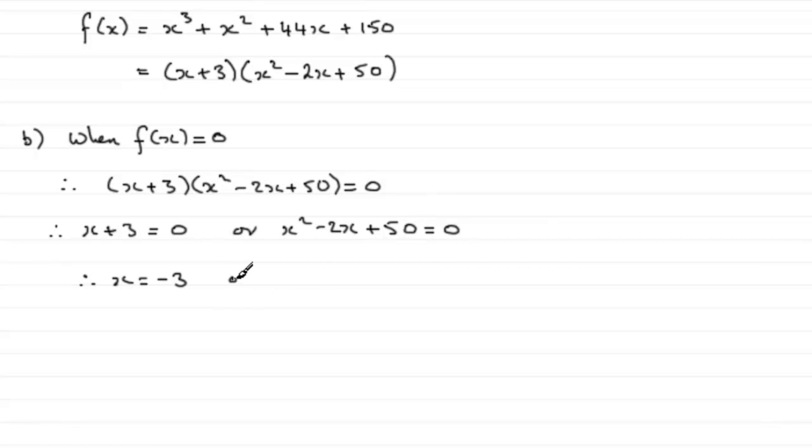So we've got x equals minus b plus or minus the square root of b squared minus 4ac, all over 2a, where we know that a is 1, b is minus 2, and c is 50.